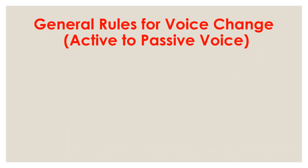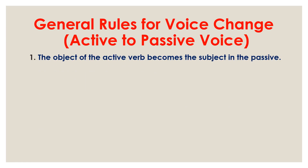Now, we will discuss about general rules for voice change — from active voice to passive voice. Number one, the object of the active verb becomes the subject in the passive. So at first, we need to use the object.